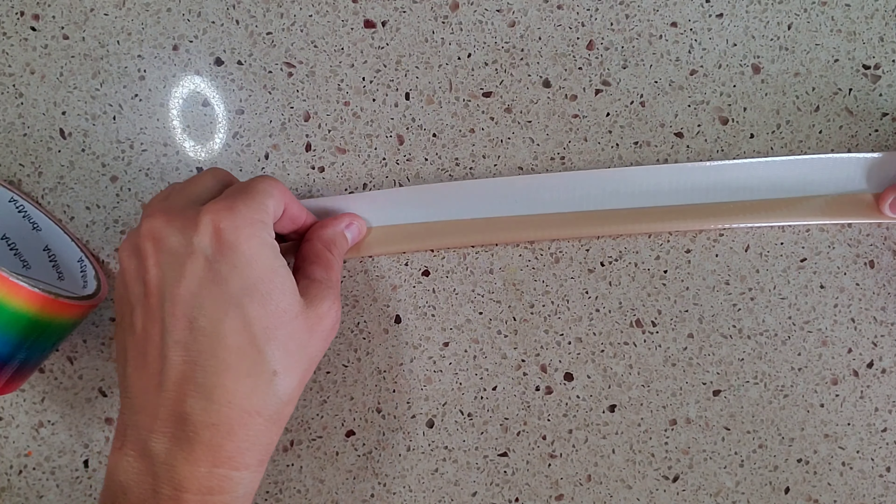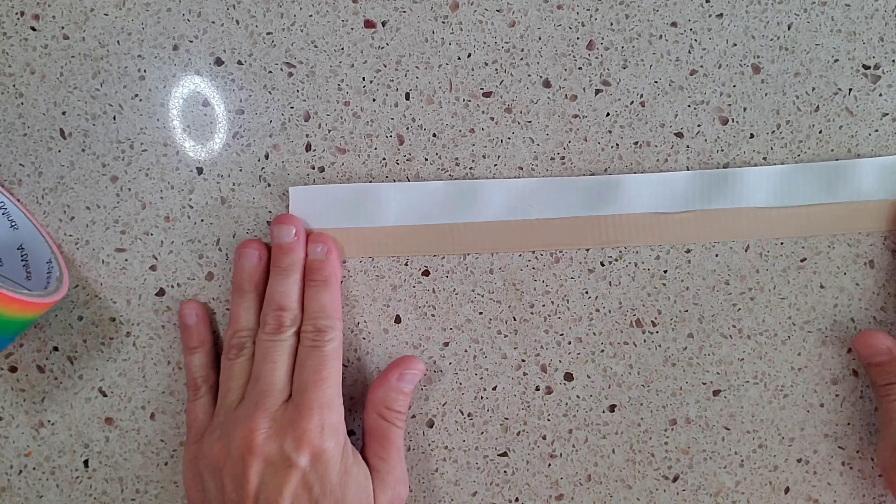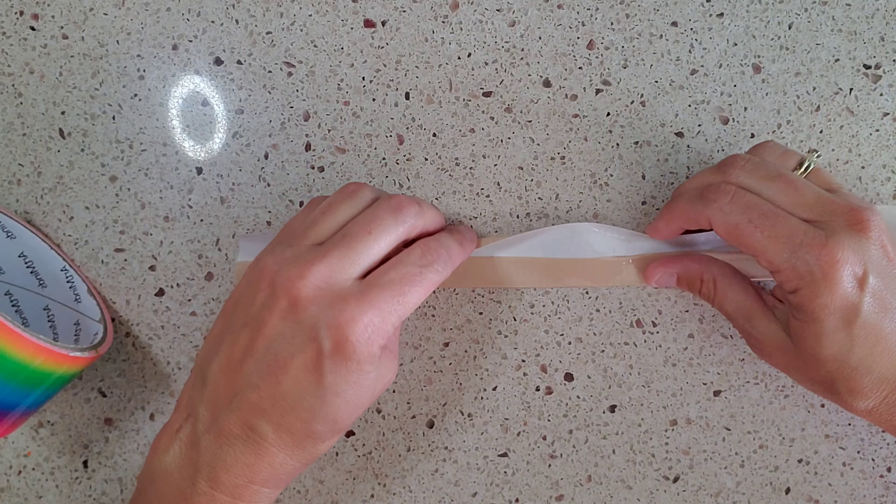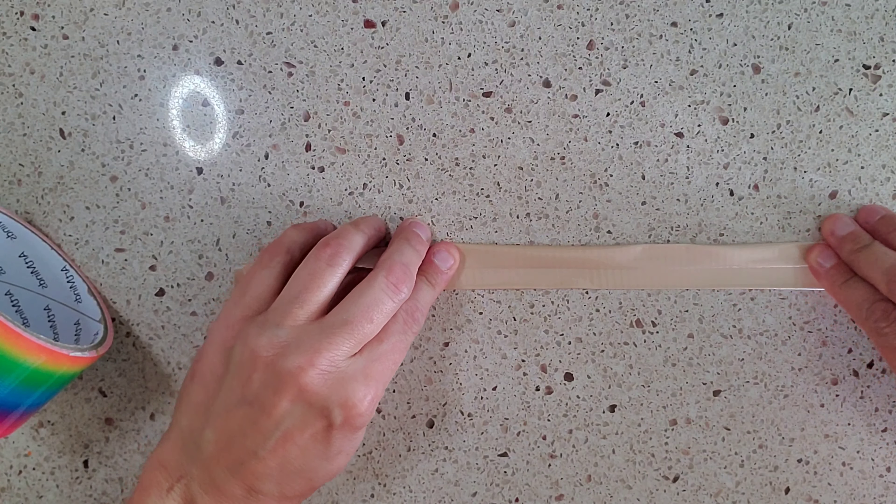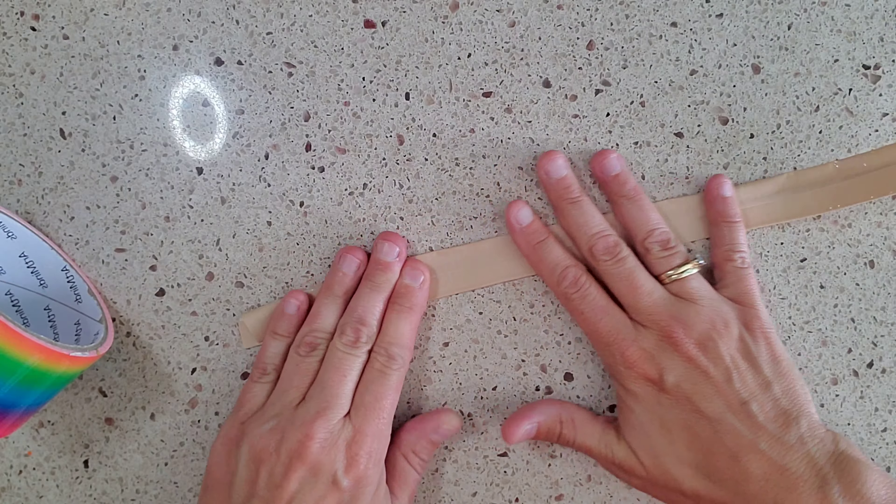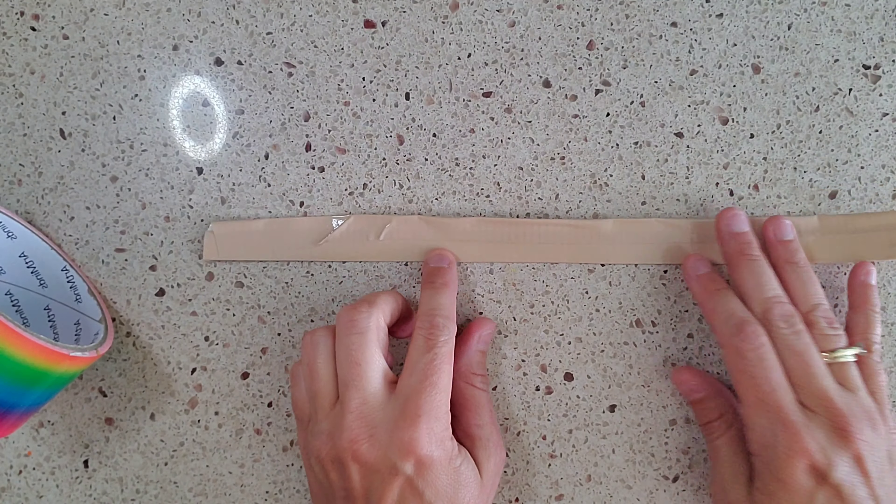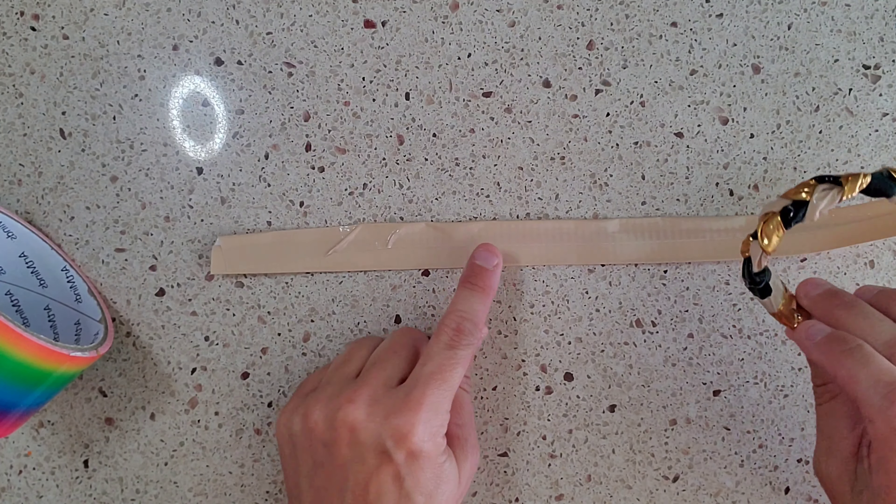You would go to the center and then push down and then you would fold it to the center again and then you would push this down and you would do that for the tan, you would do that for the bronze and you would do that for the black.